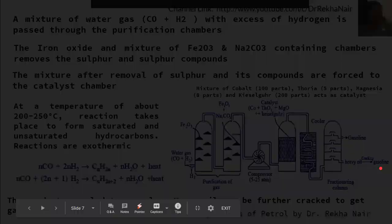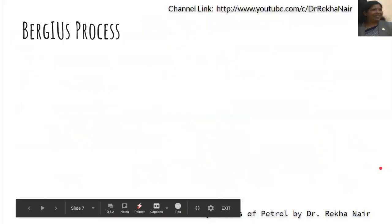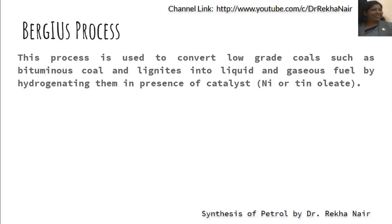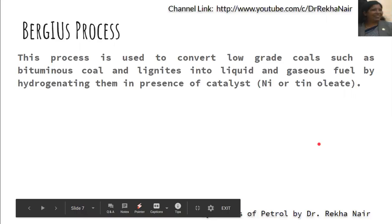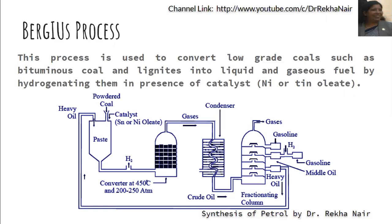The third method used to obtain petrol or gasoline is the Bergius process. In this process, low-grade coals such as bituminous coal and lignites are converted into liquid and gaseous fuel by hydrogenating them in the presence of catalysts, generally nickel or tin oil. A mixture of heavy oil, powdered coal, low-grade coals, and catalyst is prepared.